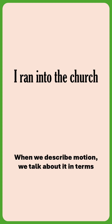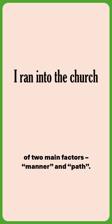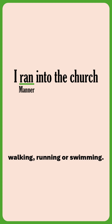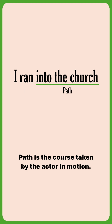When we describe motion, we talk about it in terms of two main factors: manner and path. Manner is the way the motion occurs, like walking, running, or swimming. Path is the course taken by the actor in motion.